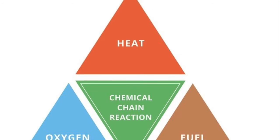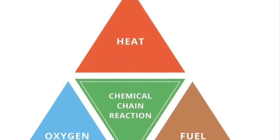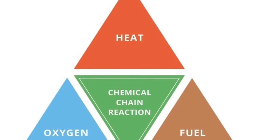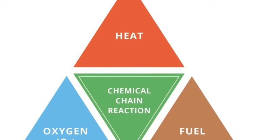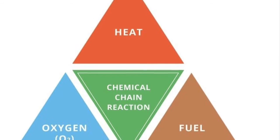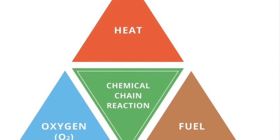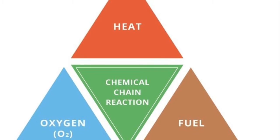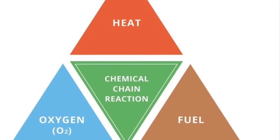The fire tetrahedron represents the four elements required to sustain a fire. In order to extinguish a fire, you must remove one or more of those elements.